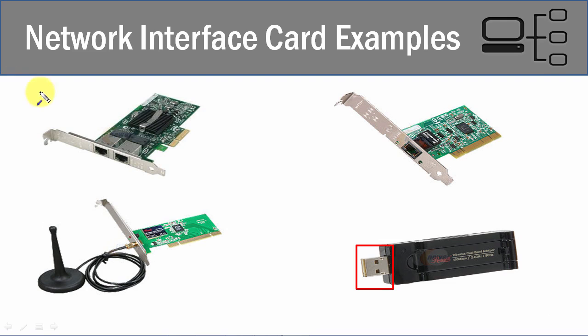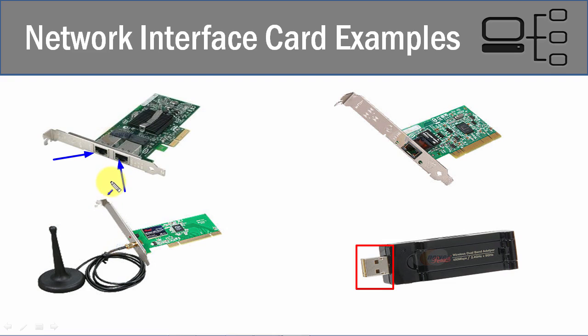When you get into the server world, you are going to need a higher level of redundancy. You're going to see network interface cards where they have two ports, so redundancy is built in. If one of the ports goes down, or if the cable breaks or there's an issue, then the second one will take effect. We're talking about things like file servers and web servers where you want a high level of redundancy and uptime.